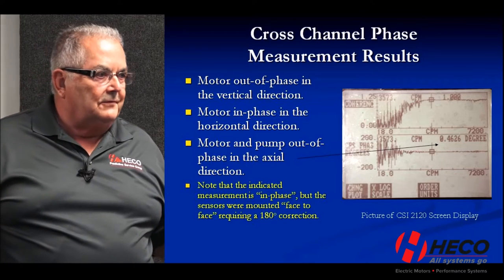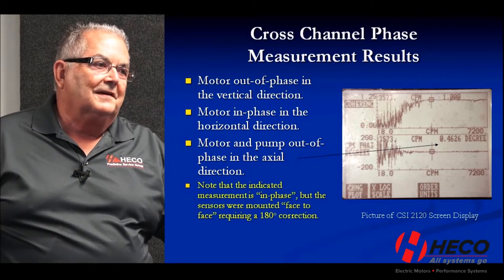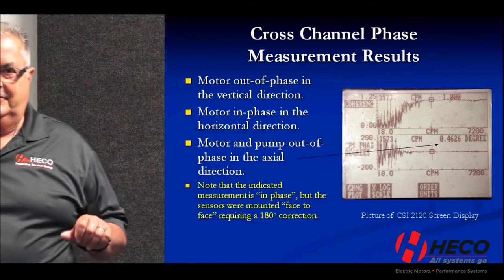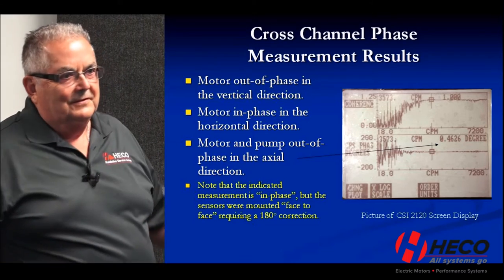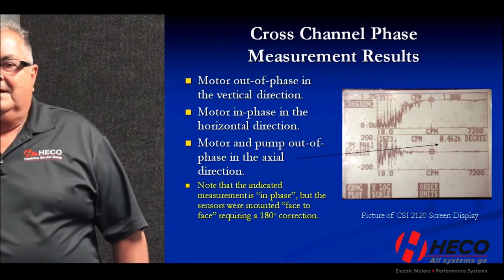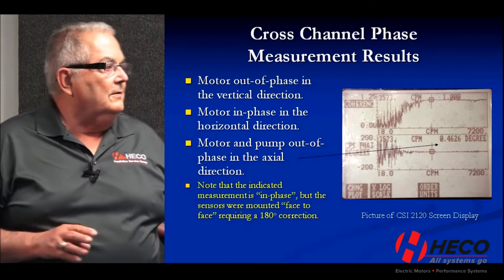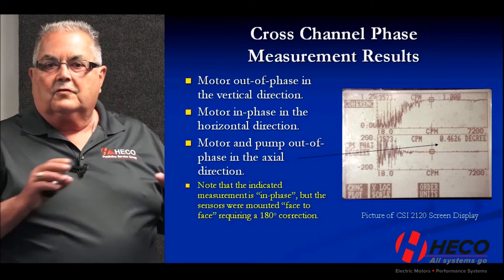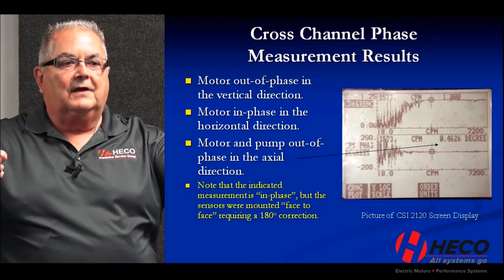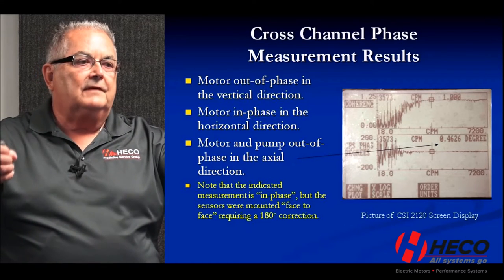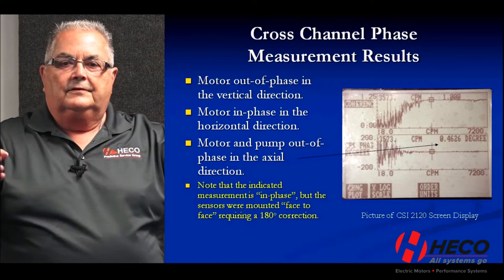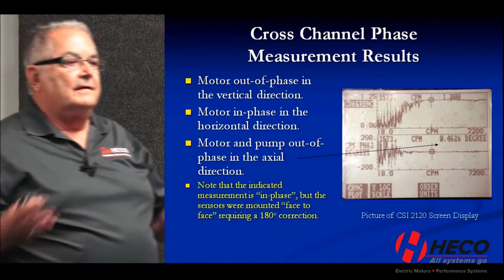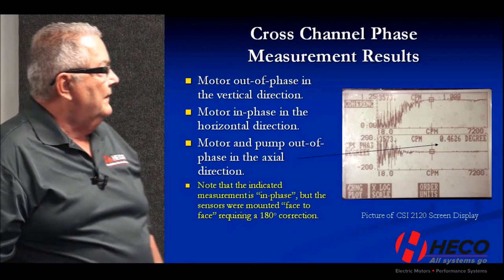So we said let's measure the phase angle. Many of you may be used to getting phase measurements by putting a piece of tape on the shaft and using a photo tach, but at 3,600 RPM that's not practical, and OSHA gets a little upset about that. Instead, we used a two-channel vibration analyzer to get what's called cross-channel phase — putting two sensors on at the same time and measuring the phase reference between them to see if they're in phase or out of phase.